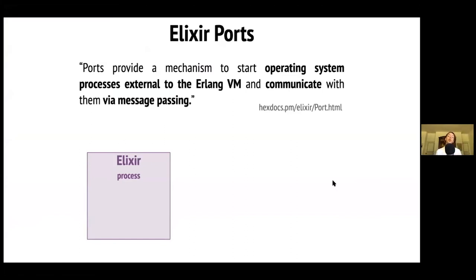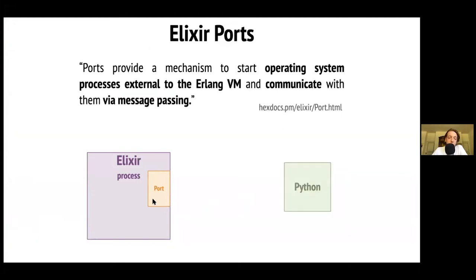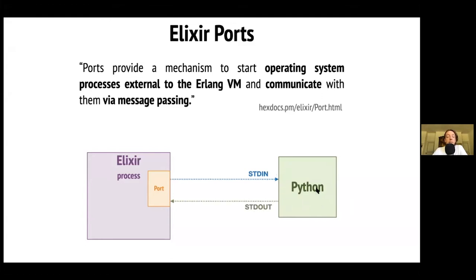Now let's see what we need on the Elixir side. We're going to use Elixir ports, which are a mechanism to launch an operating system process external to the BEAM and communicate with it via message passing. Consider we have an Elixir process that opens a port — the port launches a Python script, and they communicate via standard input and standard output. The Elixir process will receive data from Python and the port will deliver the data to the process mailbox.